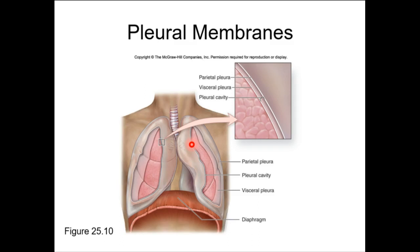You'll see serous membranes in the digestive system as well. You've known serous membranes since A&P1. The serous membrane that surrounds the lungs — it's right there on the slide — is called the pleura.